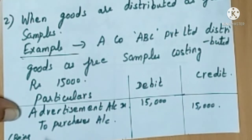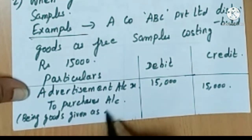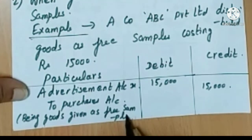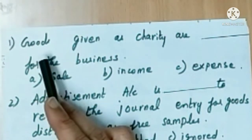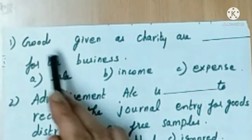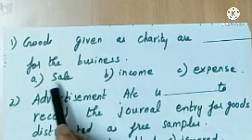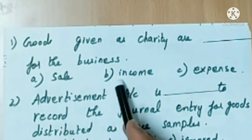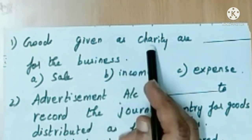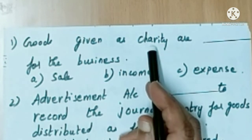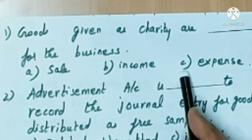Narration: being goods given as free samples. Now let's answer this question: goods given as charity are dash for the business. Option A: savings. Option B: income. Option C: expense. When goods are given as charity, it is an expense for us. So option A and B are ruled out, and option C — expense — is the correct answer. We have to write: goods given as charity are an expense for the business.